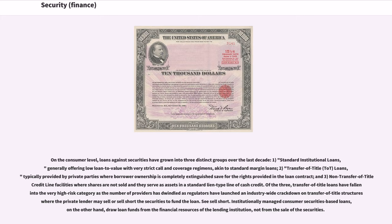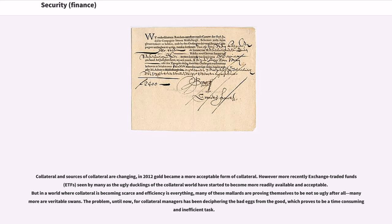Institutionally managed consumer securities-based loans, on the other hand, draw loan funds from the financial resources of the lending institution, not from the sale of the securities. Collateral and sources of collateral are changing; in 2012 gold became a more acceptable form of collateral. However, more recently exchange-traded funds, seen by many as the ugly ducklings of the collateral world, have started to become more readily available and acceptable.